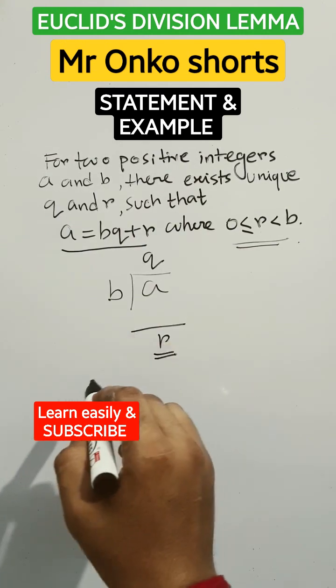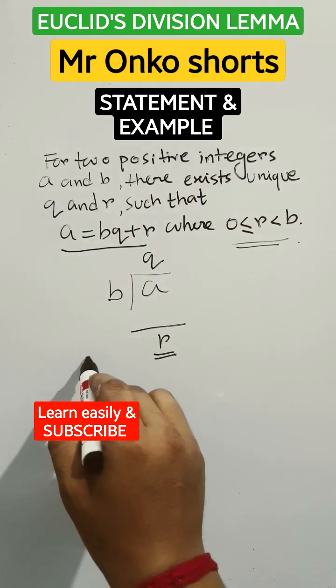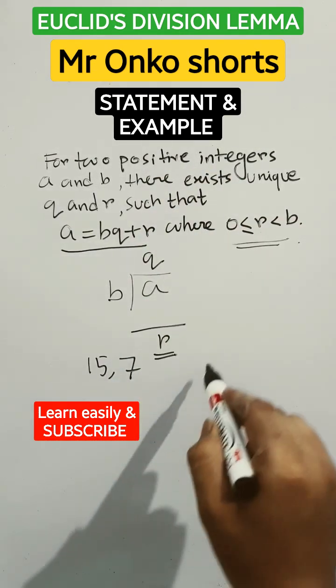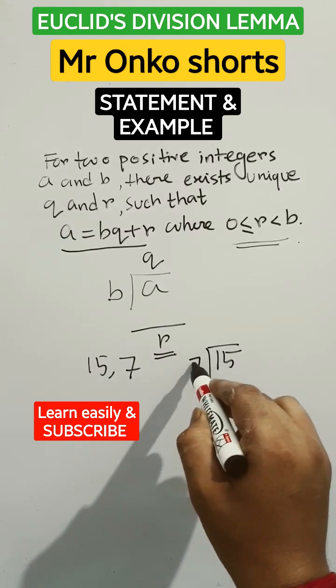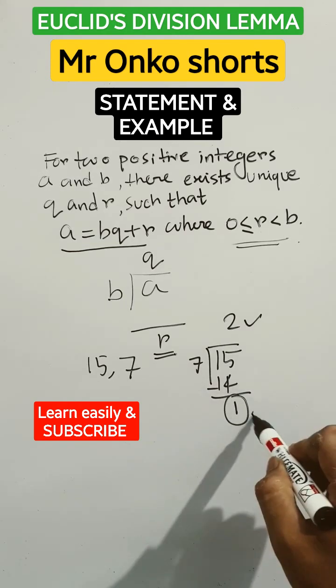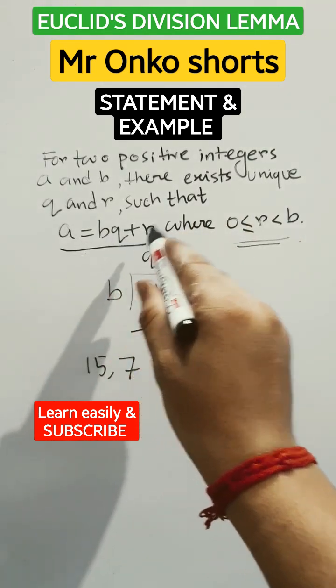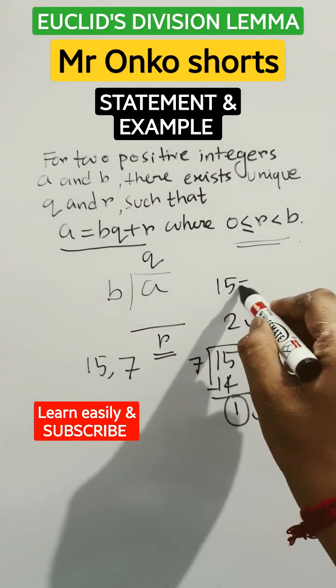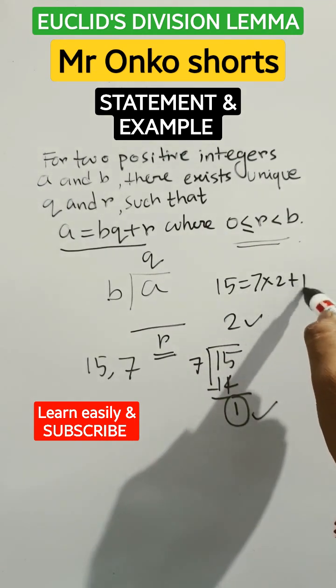Now take an example. There exist two positive integers, 15 and 7. Then 15 divided by 7 equals 2 remainder 1. For Q and R such that A equals BQ plus R, you can write 15 equals 7 times 2 plus 1.